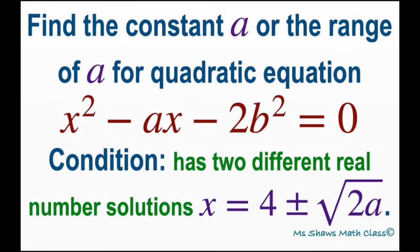And our condition is it has to have two different real number solutions which are x equals 4 plus or minus square root of 2a.